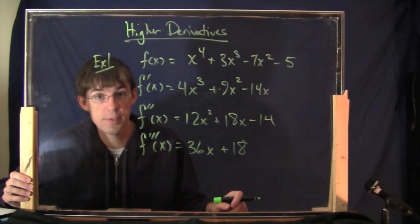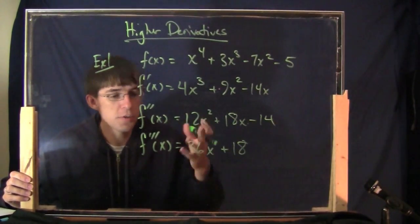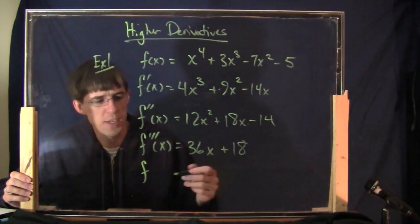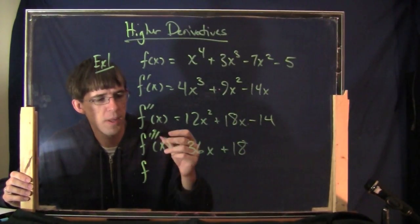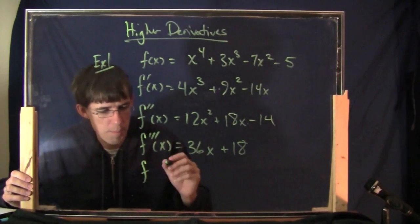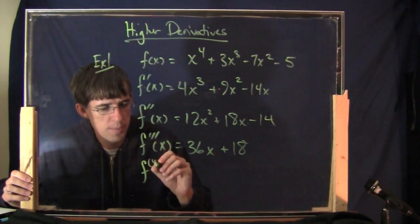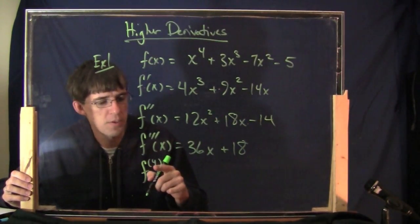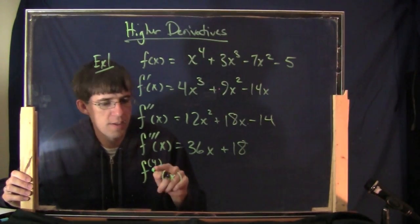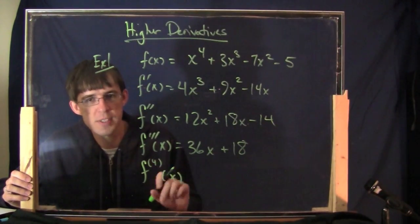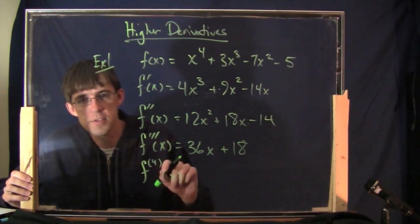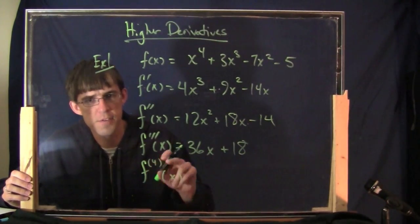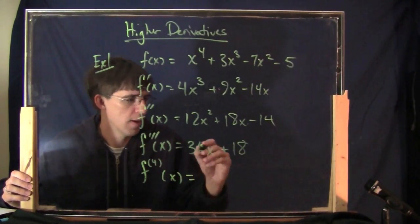Is there such a thing as the fourth derivative? Yes, there is. You can do this as many times as you want. People don't like writing a whole bunch of primes — it's kind of a pain to count them all up. So typically, after the third derivative, you start writing them with a number in parentheses. This is the fourth derivative inside the little parentheses. You put the parentheses to mean the fourth derivative. Without the parentheses, it looks like f to the fourth, which is not what you mean.